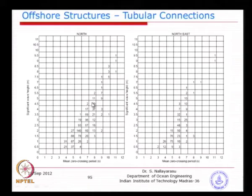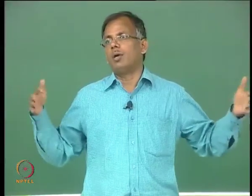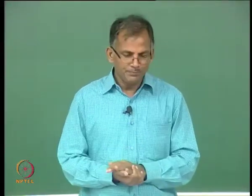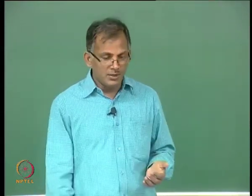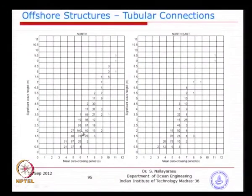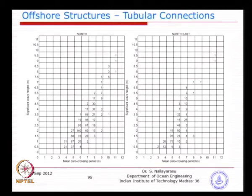Sometimes the numbers could be fractions — the total occurrence could be 1, 100, 1000, or 1 million. What we are looking at is the fraction of time that the corresponding wave associated with a given height and period is occurring. Numbers like 2, 10, 30 or fractions like 0.1, 0.3, 0.4 — ultimately we are looking at the fractional time period. You can multiply by the total duration of the design life divided by the wave period to get the corresponding number of occurrences.